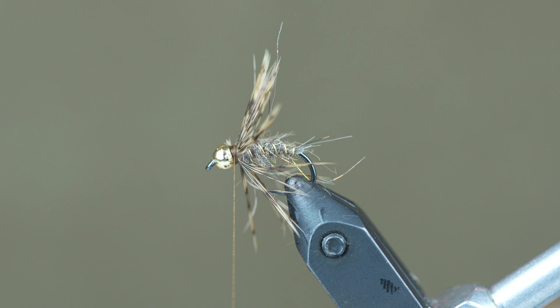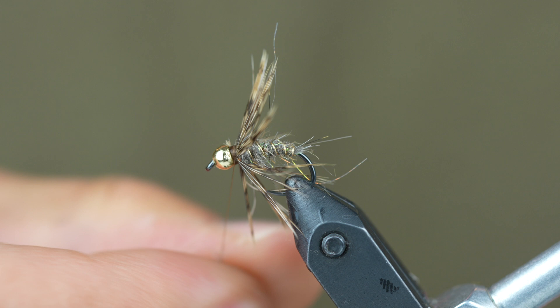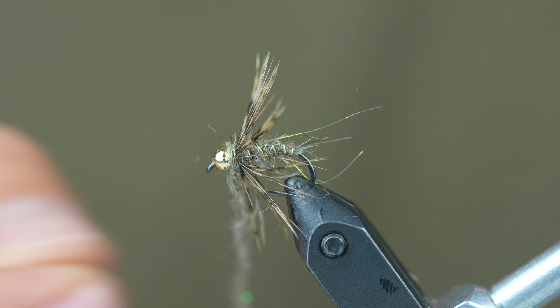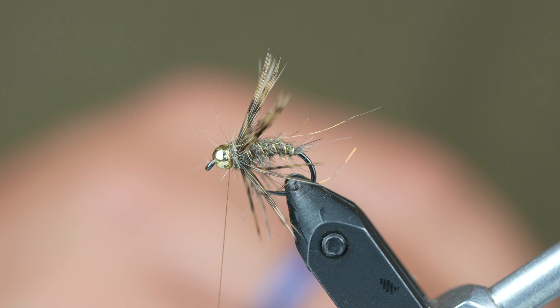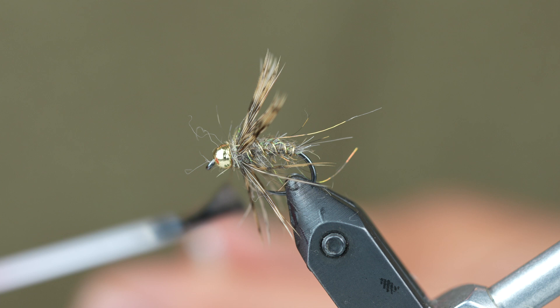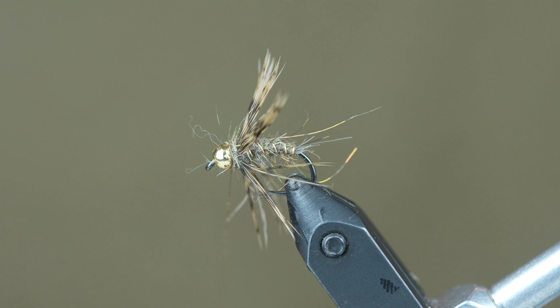We're going to go ahead and put a little more dubbing on here. That's probably a little bit too much, so we'll take some of that off. So we just built up a little bit more of that thorax right in the front of those hackles there, just to keep the taper nice and smooth throughout the body of the fly. Put a little bit of super glue on our thread, and then we'll finish it.